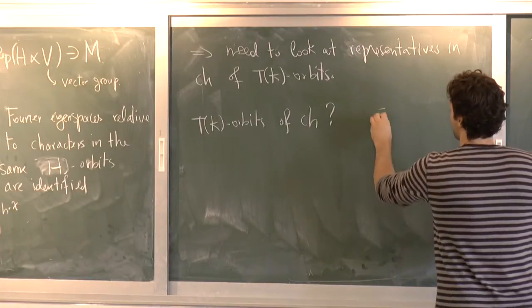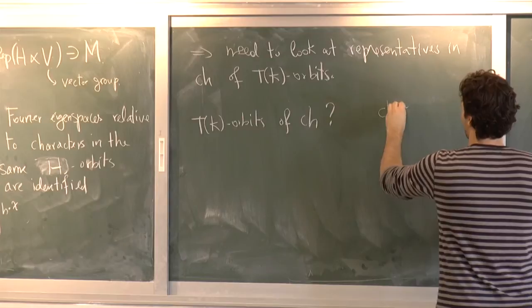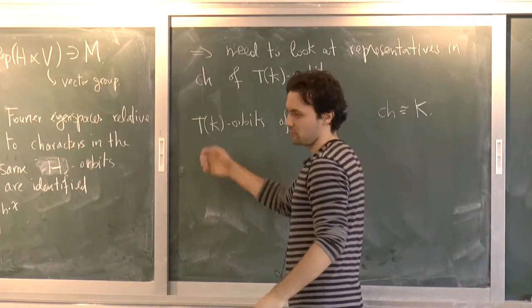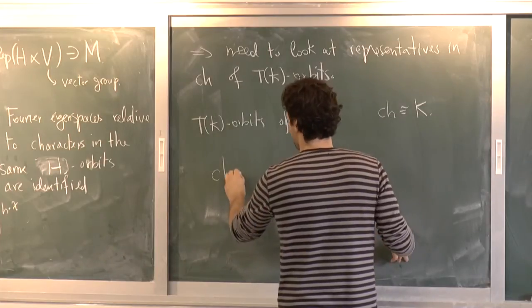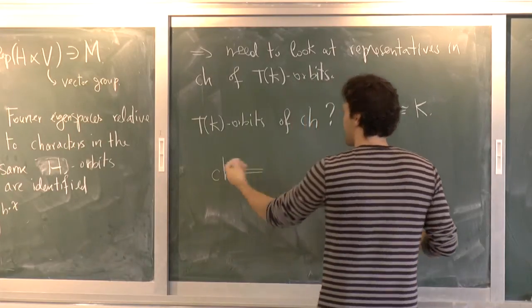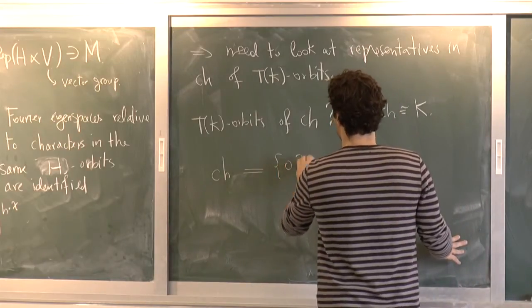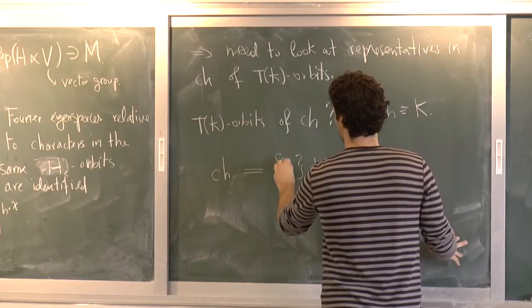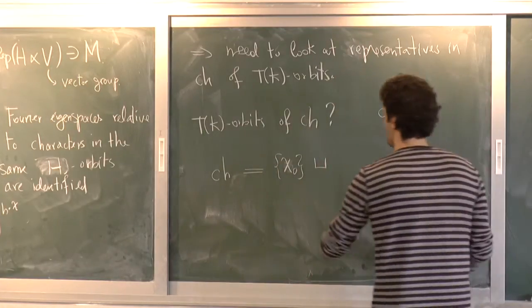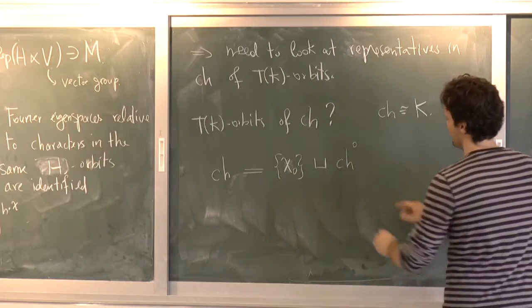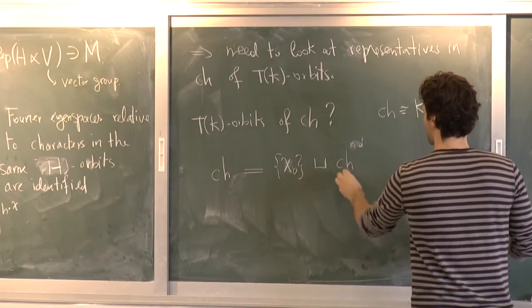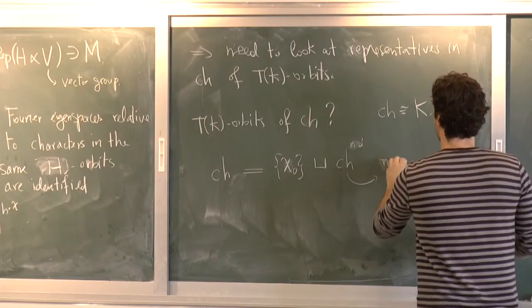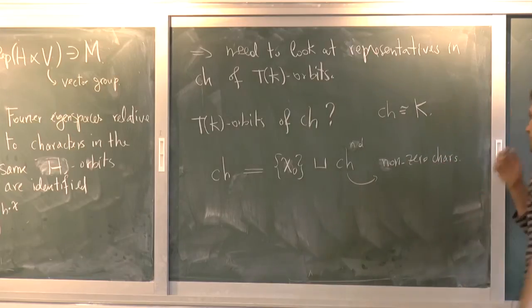So that brings me to the next question, is what are the T of K orbits of CH? And basically, we know it already because CH was isomorphic to K, and then T of K acts via its unique simple root. So just a simple, very easy thing I'm saying is that space of characters of N of A, trivial on N of K is decomposed as follows. You have the 0 character, which I called actually chi 0 before, and all the rest. Let me put a circle here, or maybe non-degenerate, and D for non-degenerate, so that are the non-zero characters.